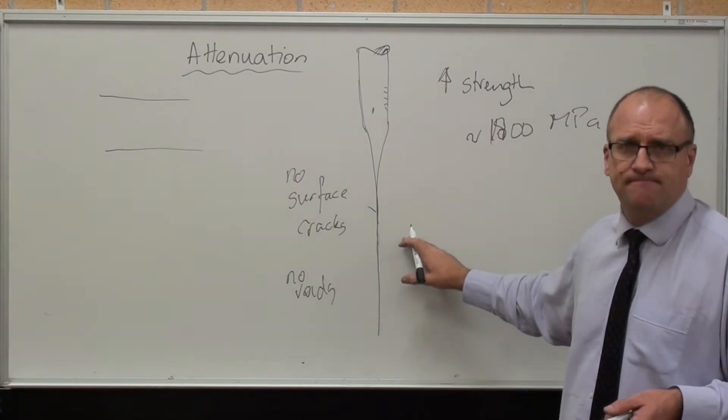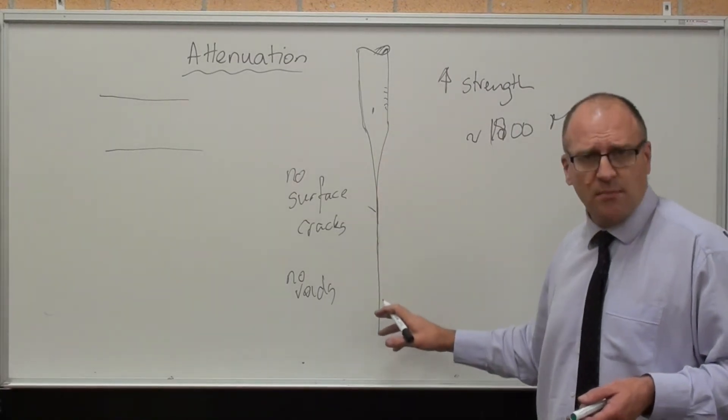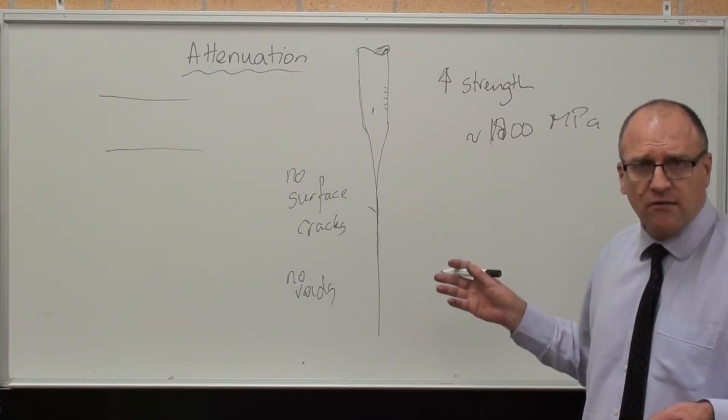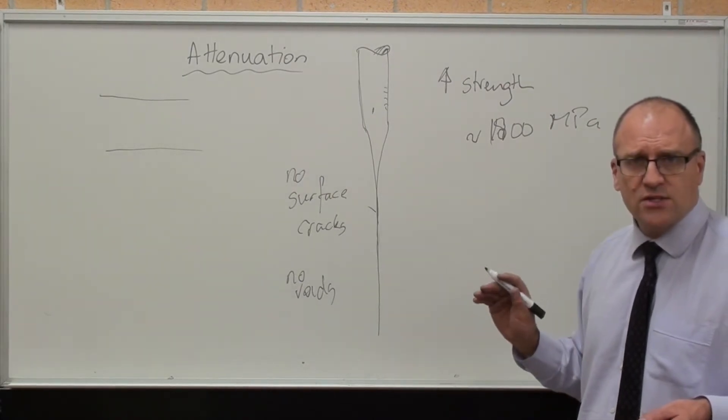The issue we've got is, what if there's a joint? Because even though this might be 25, 30 kilometres long, 300 metres long, you've got to join these two together.